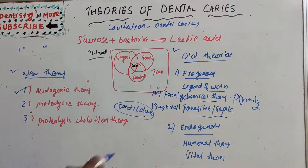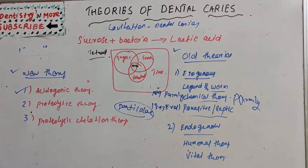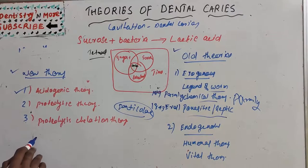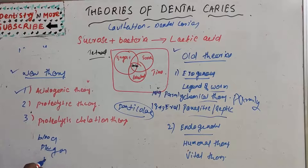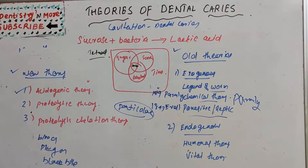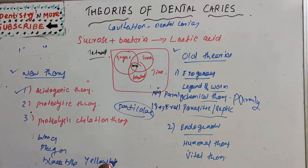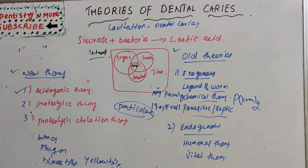Now moving on to the endogenous theories. The first one is the humoral theory, which explains about the four humors of the body: blood, phlegm, black bile, and yellow bile. Any change in the relative proportion of these elements would result in disease — that means dental caries. That is the humoral theory.